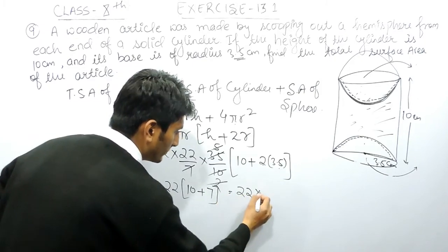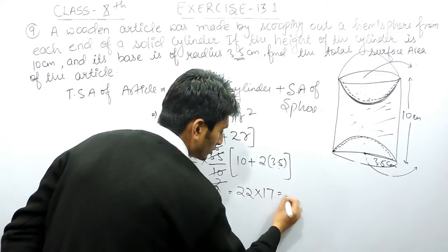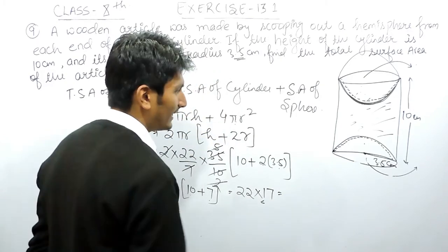And this is 22 multiplied by 10 plus 7 is 17. So if I multiply these two numbers, I will get my answer.